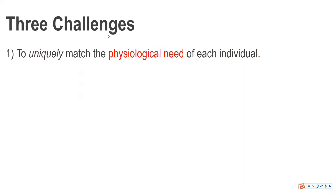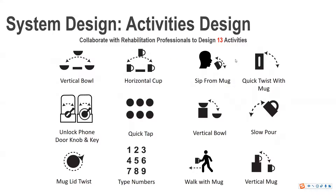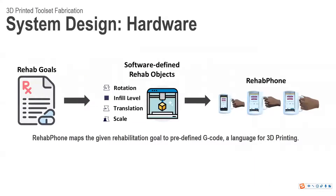To achieve this goal, there are three challenges to consider. The first is to uniquely match the physiological need of each individual. For this purpose, we collaborate with rehabilitation professionals to design certain activities, and each activity has a specific rehabilitation goal. Rehabphone then maps a given rehabilitation goal to predefined G-code for 3D printing. This G-code can produce the requested rehabilitation objects with commercial 3D printers. The smartphone couples with the printed rehabilitation objects in a way that allows stroke survivors to mimic daily life activities, while also measuring their behaviors.